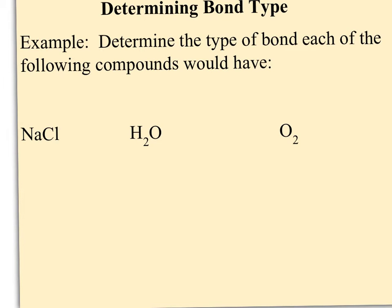To determine the type of bond, you just need an electronegativity chart nearby; you don't have to draw structures because we're just talking about the bonds. For NaCl, which has one bond: sodium's electronegativity is 0.93 and chlorine's is 3.16. Subtracting gives a difference of 2.23, which is much higher than 1.7. So that's considered an ionic bond.